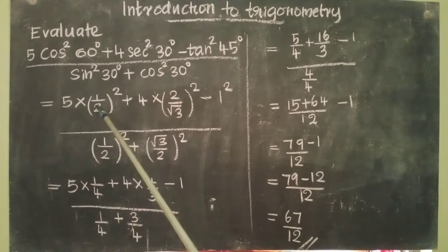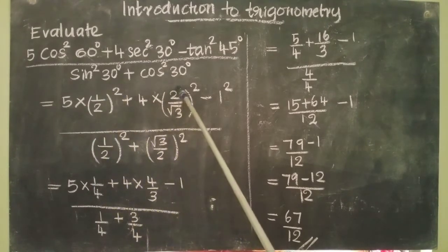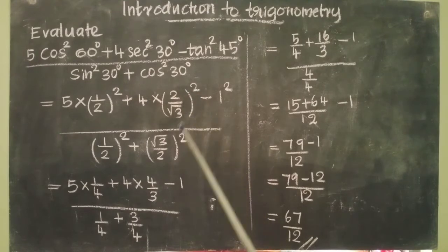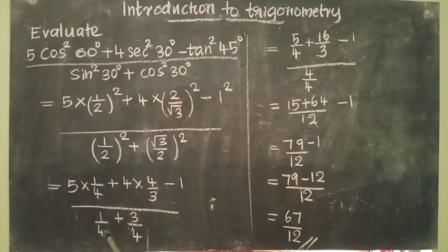We know (1/2)² is 1/4, (2/√3)² is 4/3. Again here, (1/2)² is 1/4, and (√3/2)² is 3/4.